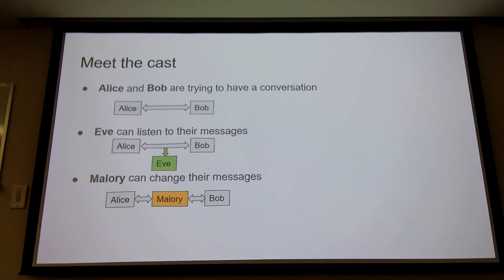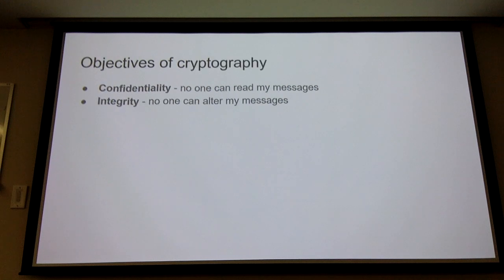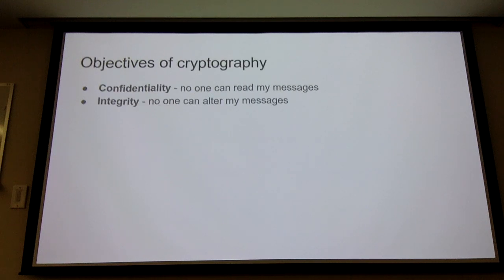When we talk about crypto, we talk about Alice and Bob. Alice and Bob are trying to have a conversation, but there's an eavesdropper, Eve, who can listen to their messages, or possibly there's Mallory who can change their messages. The two objectives of cryptography are confidentiality — no one can read my messages — and integrity — no one can alter my messages, or at least not without me knowing about it.